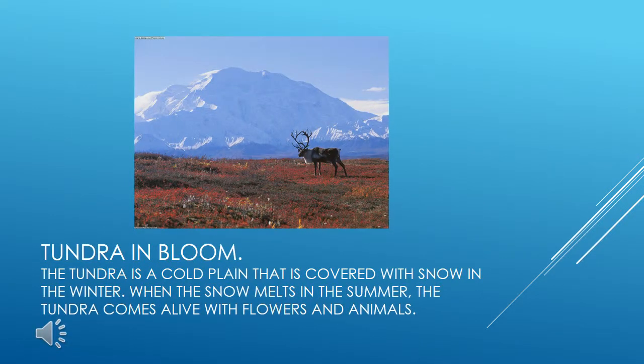Tundra in bloom. The tundra is a cold plain that is covered with snow in the winter. When the snow melts in the summer, the tundra comes alive with flowers and animals.